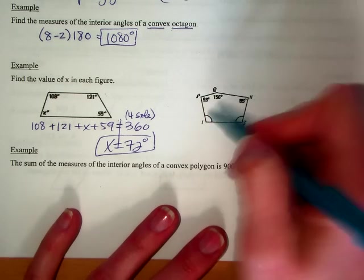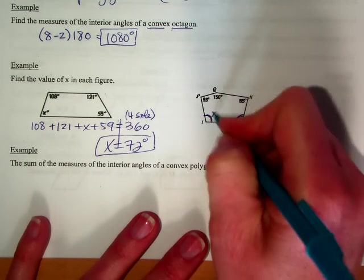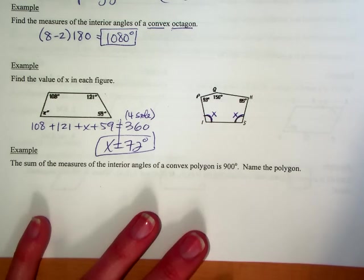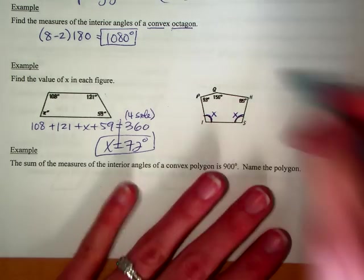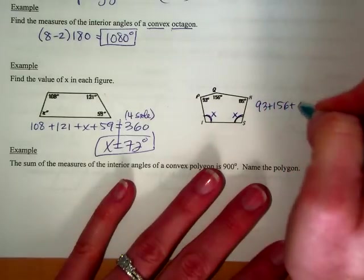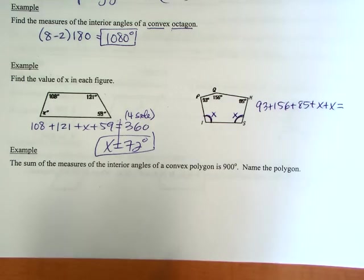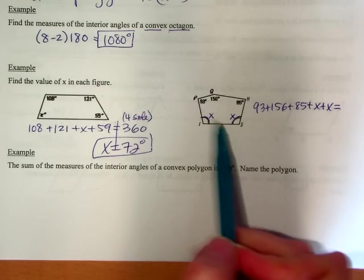Next, just to remind you, if there are these two kind of arky-looking things, that means those two angles are the same. So if one is x, the other one has to be x. They have to be the same thing. I'm going to add them all up, so 93, 156, 85, and an x and an x. And now we've got to figure out what it's equal to. This shape has five sides: 1, 2, 3, 4, 5.